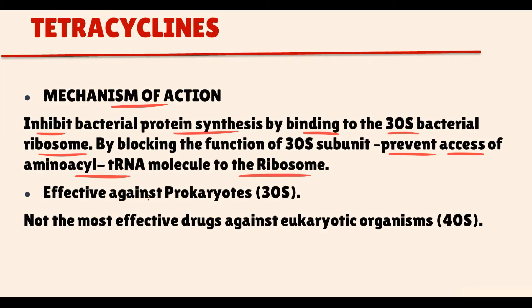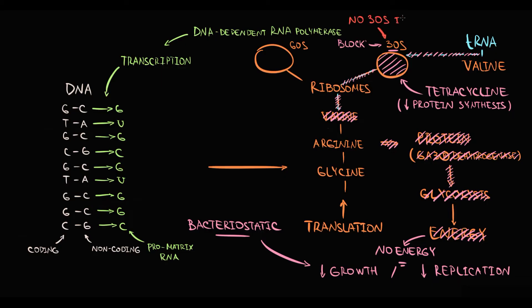But important: tetracyclines are effective primarily against prokaryotes. The major drawback of tetracyclines is that they are not the most effective drugs against eukaryotic organisms. And to explain why, we have to know that in eukaryotes, there is no 30S ribosome subunit. In eukaryotes, ribosomes are composed of 40S and 60S subunits. So, as we see, because tetracycline binds to 30S subunit and not to 40S subunit, eukaryotic organisms are not so vulnerable. So it's not the most effective antibiotic against eukaryotic organisms.